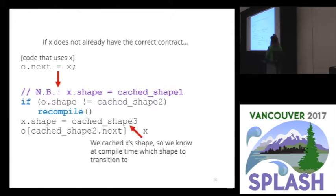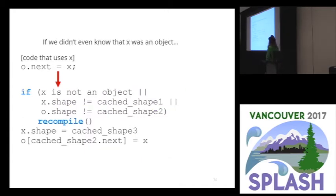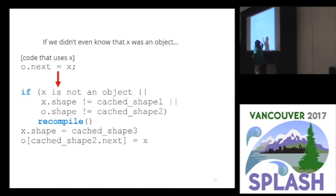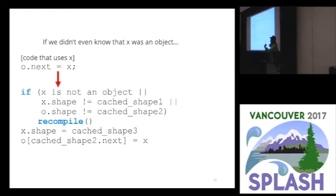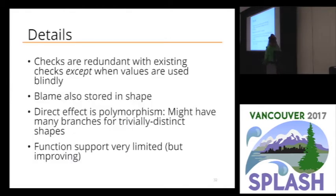We do have to actually check something if we know nothing about x. If x is just some blind value, we're going to have to check: is x an object, is x's shape the shape we expect, is o's shape what we expect — and then do the assignment. So we're only incurring the check if the VM didn't already know that, but the VM probably already knew that. Those checks are redundant so long as you've used the value at some point. If you've used the value, you've cached its shape — that's all we need.